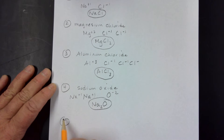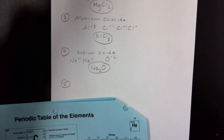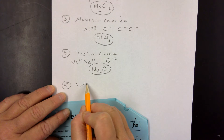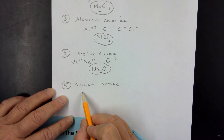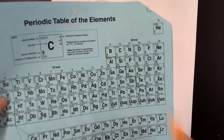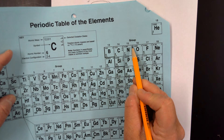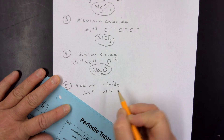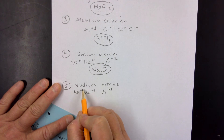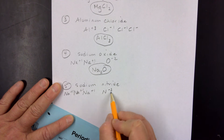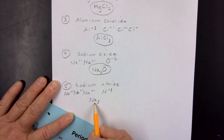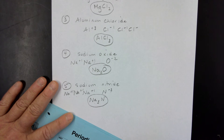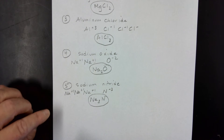Example number five: sodium nitride. Sodium is a plus one charge. Nitride is nitrogen — we take the top charge from the periodic table, which is minus three: N⁻³. We're going to need three sodium plus one ions to match this one minus three ion. We indicate that with a subscript of three on sodium and one nitride ion: Na₃N. That's why we need multiple ions in an ionic compound.